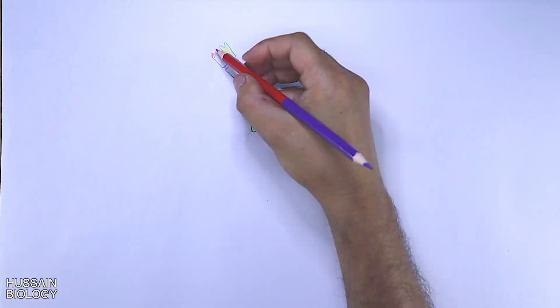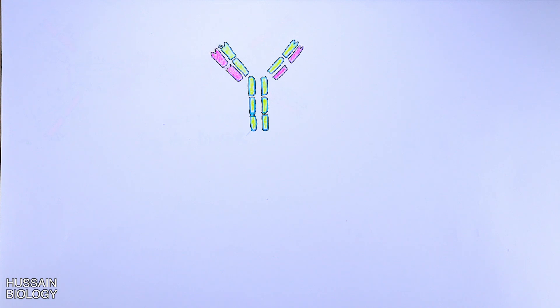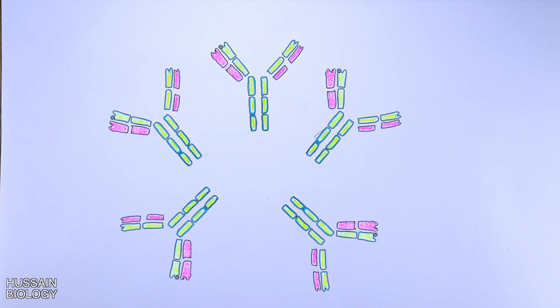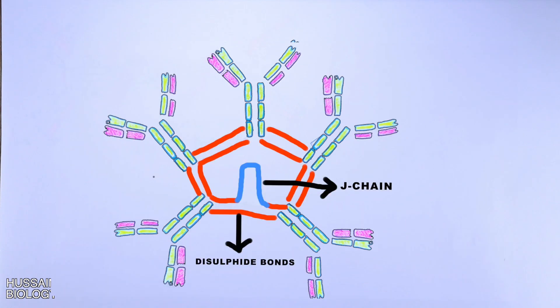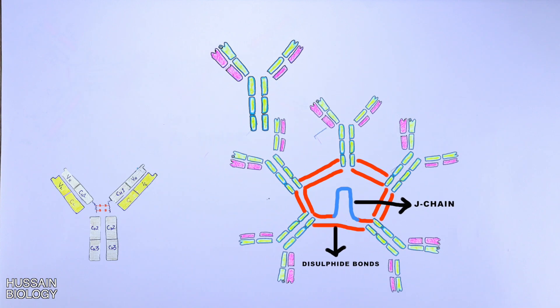Now looking at the IgM antibody, it too has same monomeric structure as IgE antibody, but it occurs in pentameric structure as shown in the diagram. This pentamer form of IgM has also J chain in its structure as shown in the diagram.